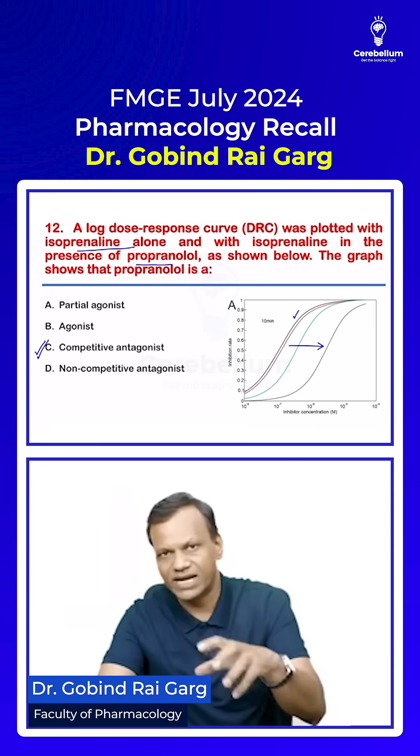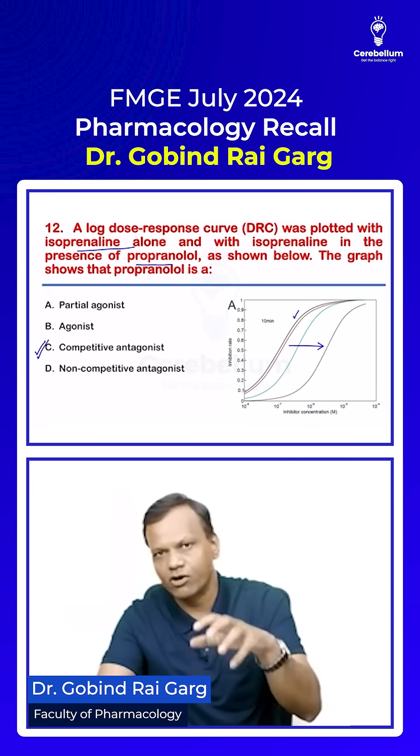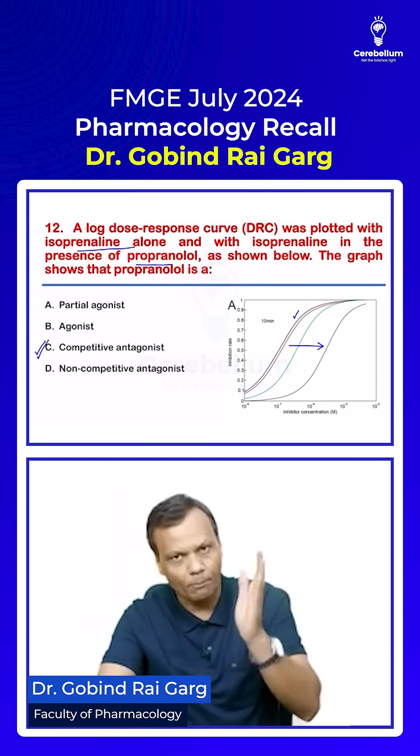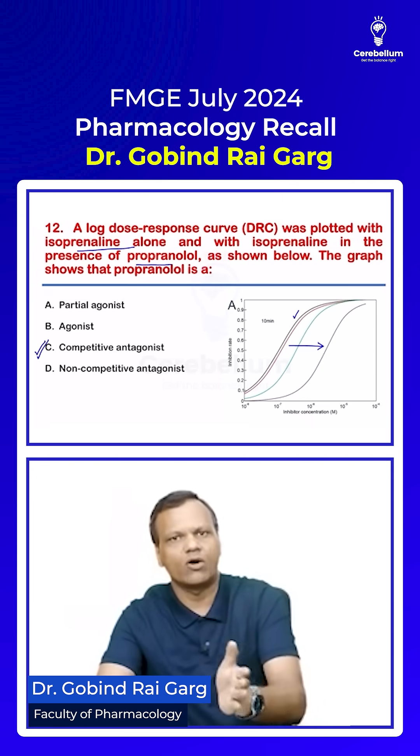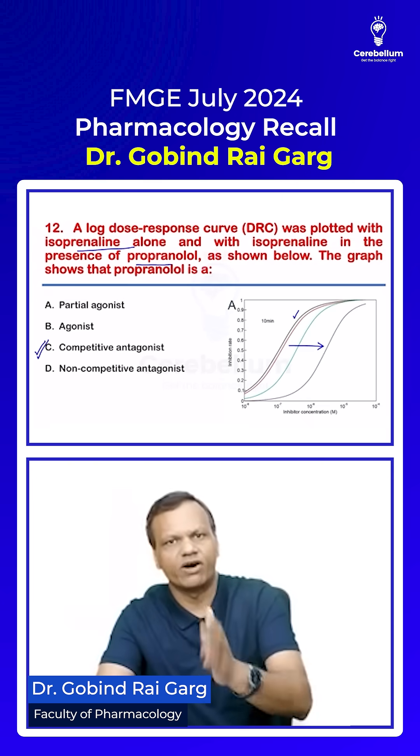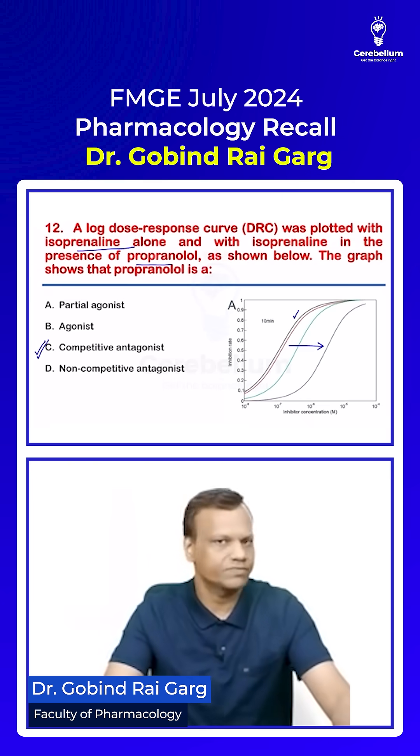Since isoprenaline works on beta receptors, propranolol is a competitive antagonist of beta-1 receptors.